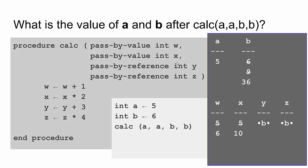So the final answer here is that a has a value 5, and b has the value 36. You use your understanding of pass by value, pass by reference, as well as your understanding of assignment operators, simple arithmetic, and calling procedures.